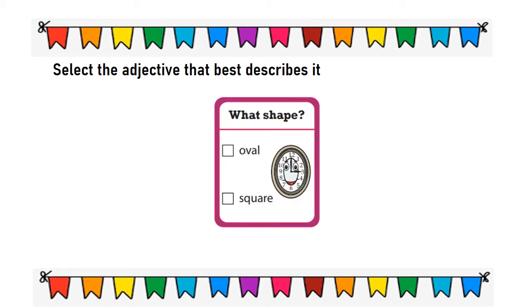What shape? The clock is oval or square? It is an oval clock. Here the word oval is the adjective.